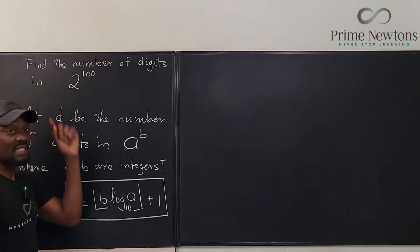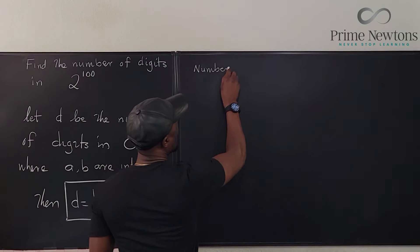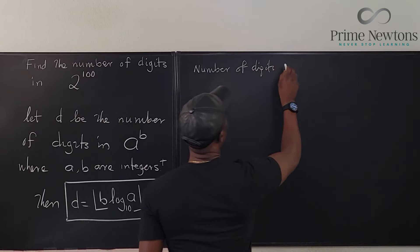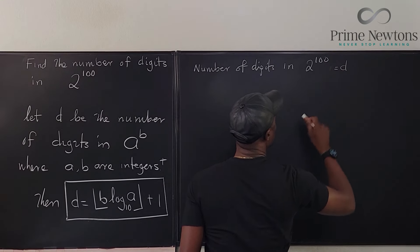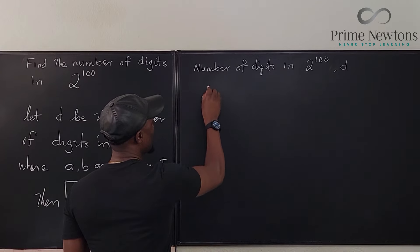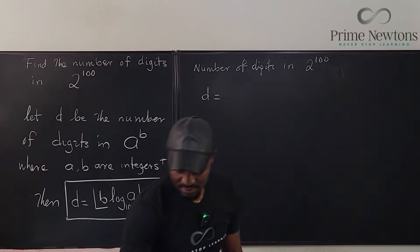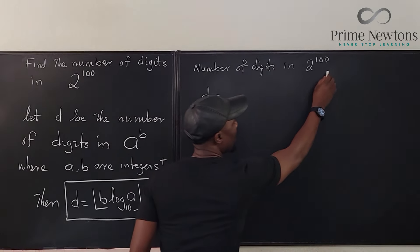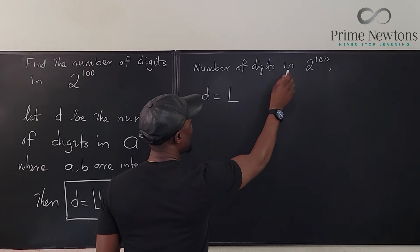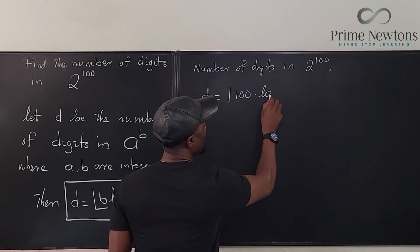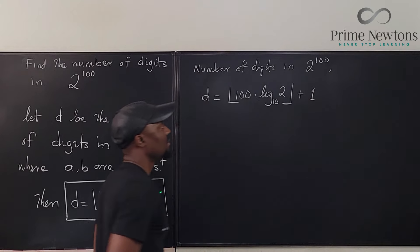So that means we can easily compute this. Number of digits in 2 raised to power 100 equals D. We have D will be equal to the floor of 100 times log to base 10 of 2 plus 1. That's it.